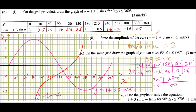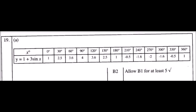Part D: use the graph to solve the equation 1 plus 3 sin x equals tan x, earning one mark. To solve it, you look for where the two graphs intersect. The intersection point gives the angle, which is approximately x equals 195 degrees. By identifying that intersection, you earn the one mark.